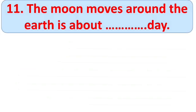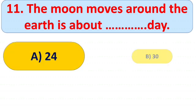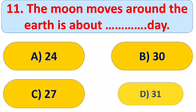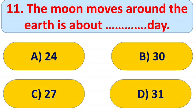Question number eleven: the Moon moves around the Earth in about blank days — A) 24, B) 13, C) 27, and D) 31. You have to tell in how many days the Moon moves around the Earth. The right answer is C) 27 days.